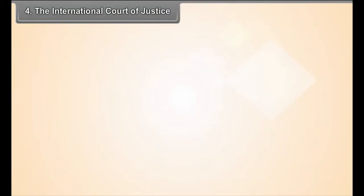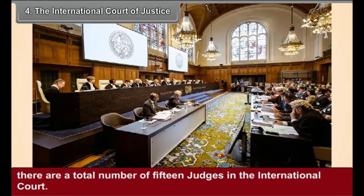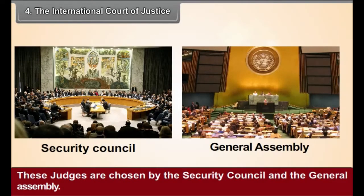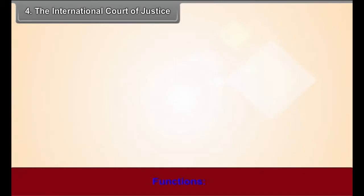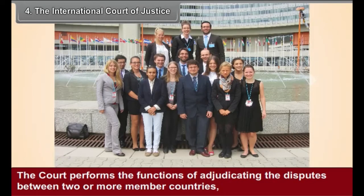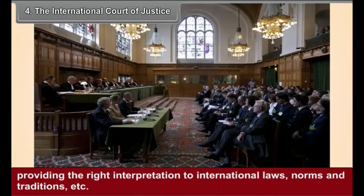The International Court of Justice — Structure: There are a total of 15 judges in the International Court. These judges are chosen by the Security Council and the General Assembly. Functions: The Court adjudicates disputes between two or more member countries, and provides the right interpretation to international laws, norms, and traditions.